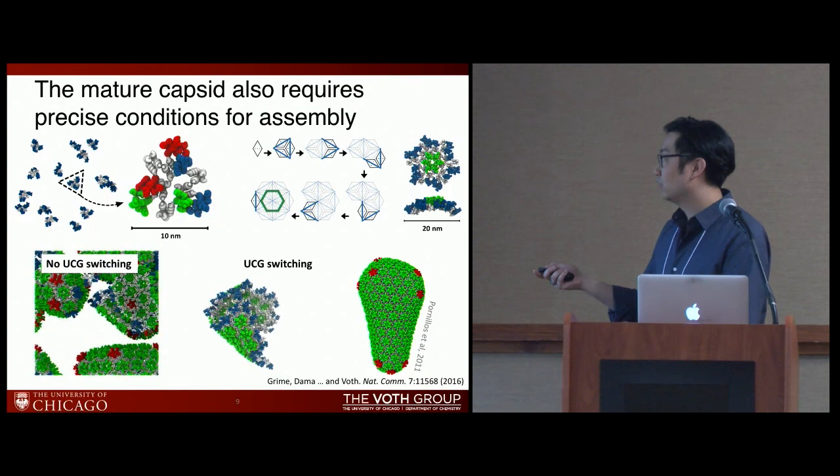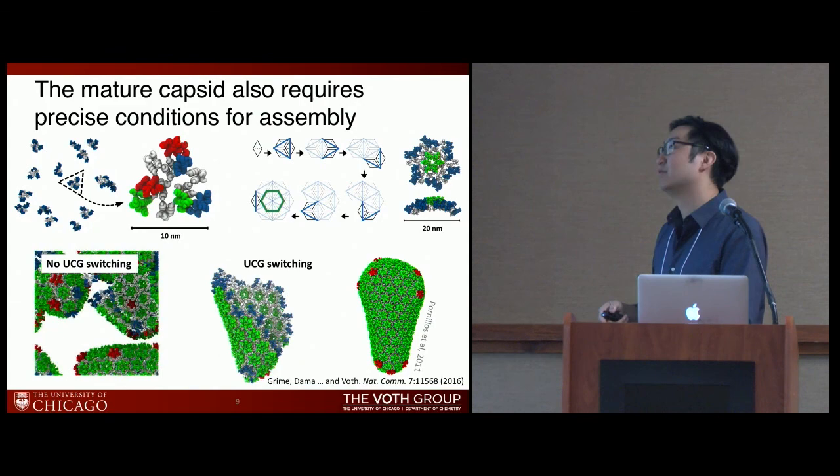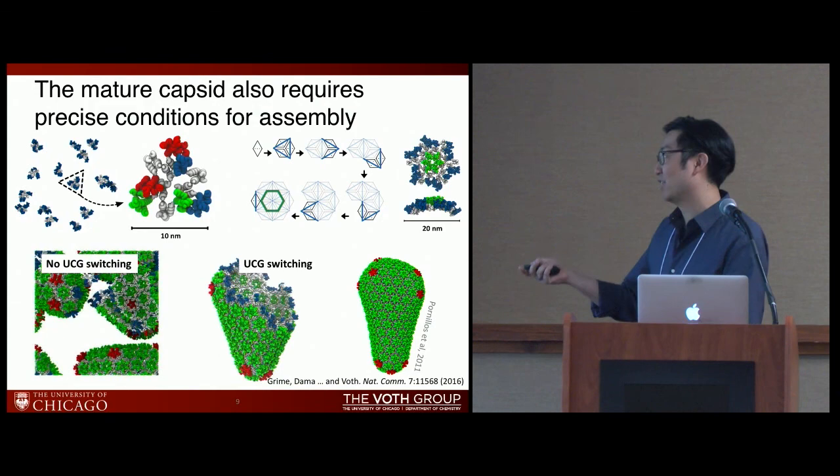These simulations run on the order of 300 million time steps, so they take quite a long time and we haven't gotten them to completion yet. But you can see that if run long enough, they would probably produce something close to the proper capsid structure.